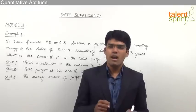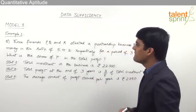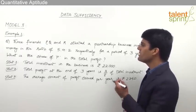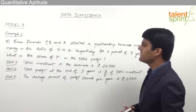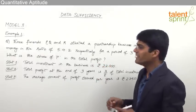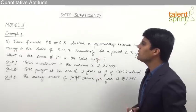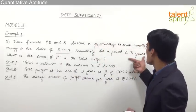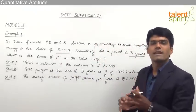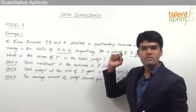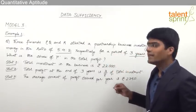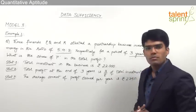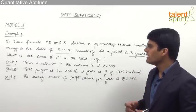Let's take an example. Three friends P, Q, and R started a partnership business investing money in the ratio 5:4:2 respectively for a period of 3 years. What is the share of P in the total profit? All three friends invested for the same 3-year period, and we need to find P's individual profit out of the total profit.